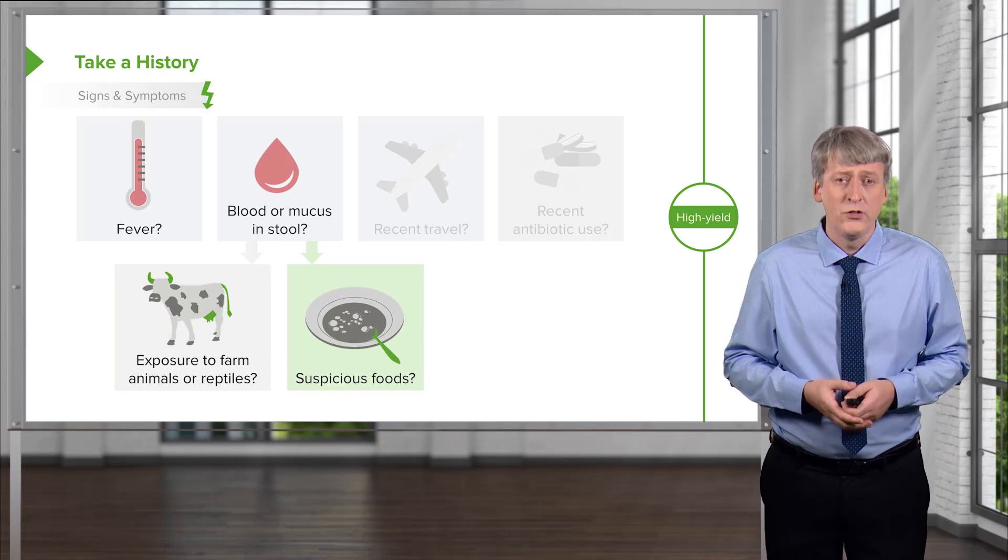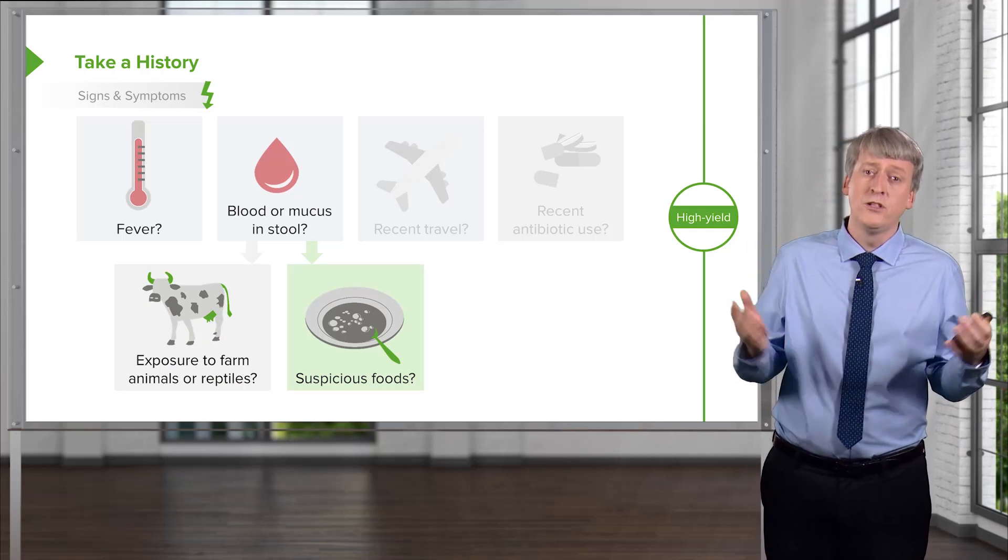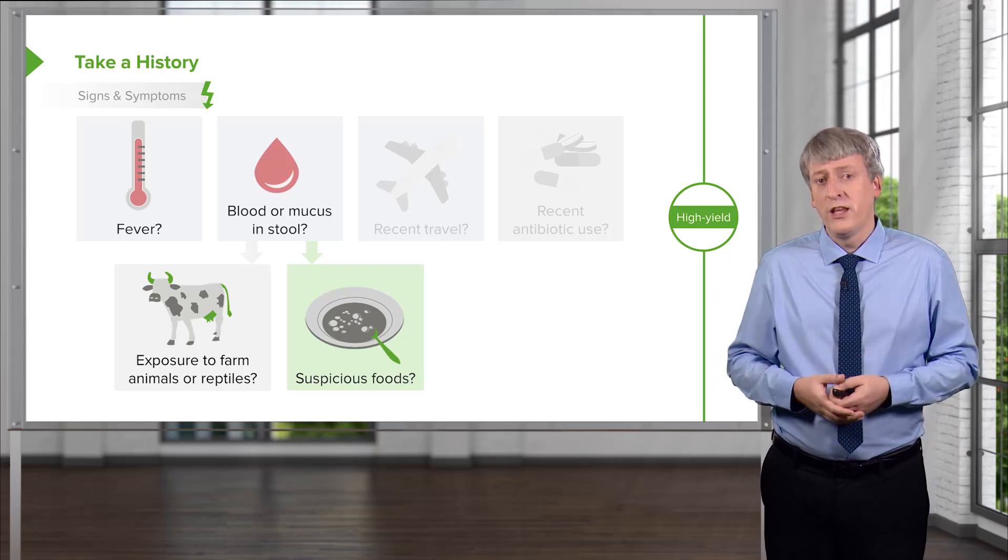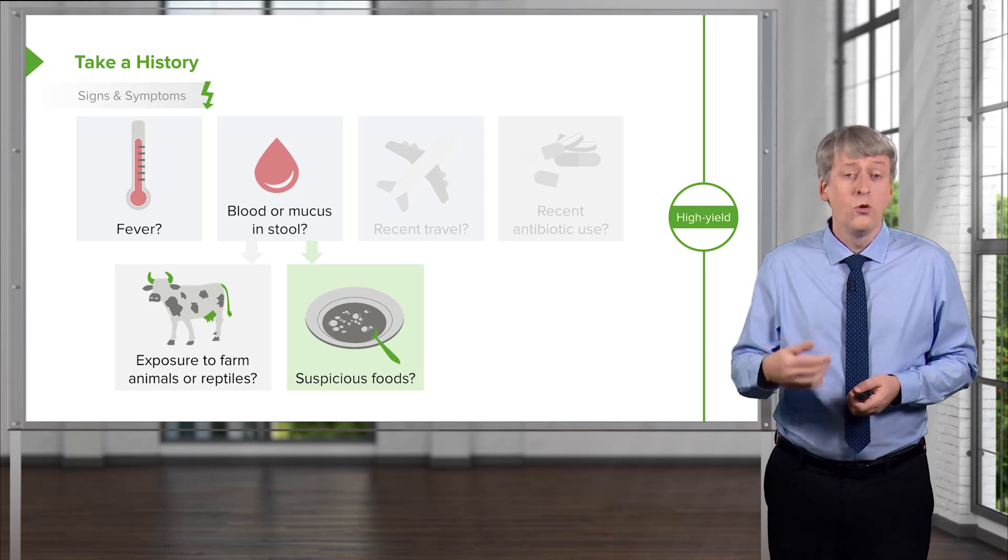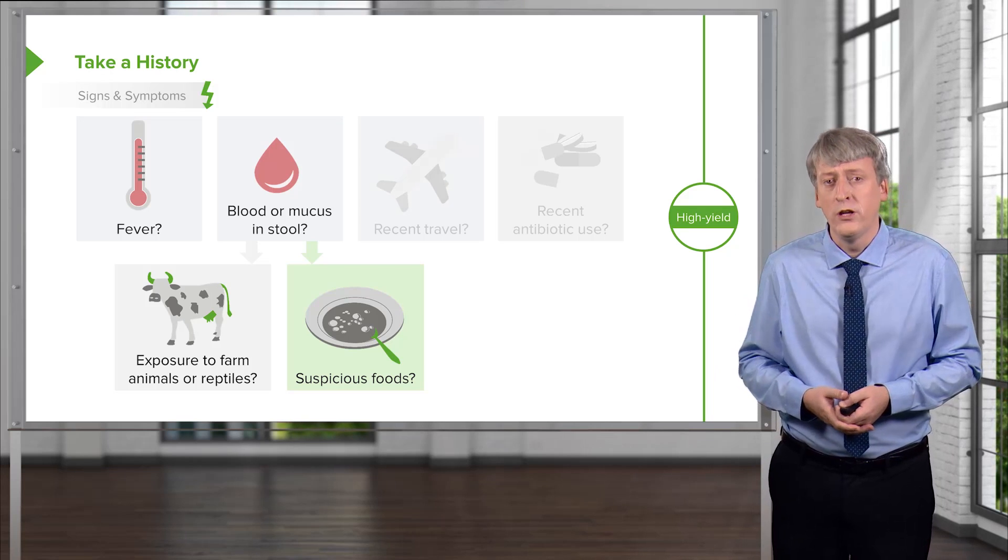Suspicious foods are always a potential cause and we hear about outbreaks all the time. For example, E. coli and spinach. This happens periodically, so you might ask about suspicious or undercooked foods, things like uncooked eggs which might show up in raw cookie dough.